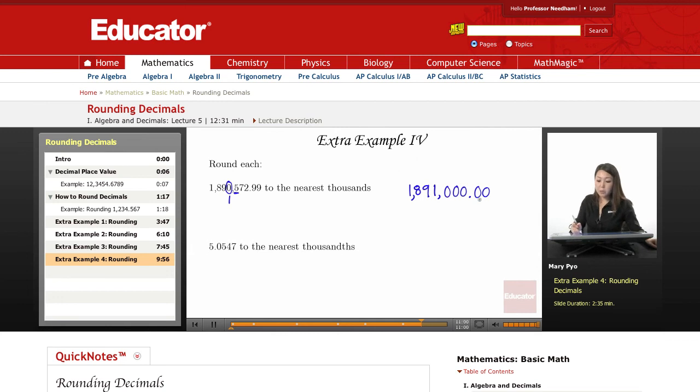And again, because these 0s are at the end of a number and they're behind the decimal point, I don't have to write them out. Okay, but I could if I want. I can just leave it like that. So this is the number when you round this to the nearest thousands.